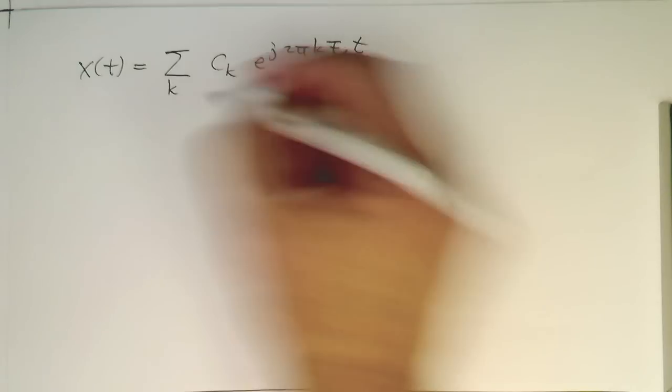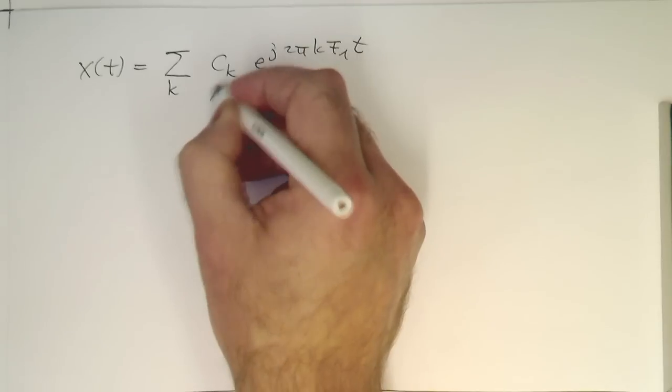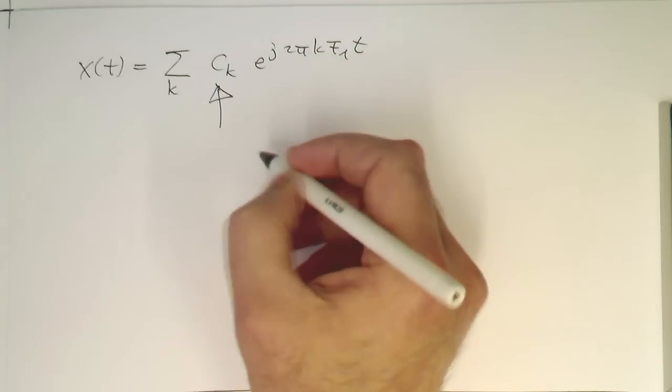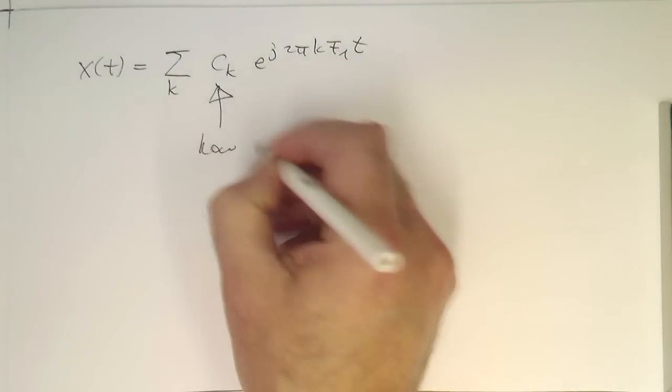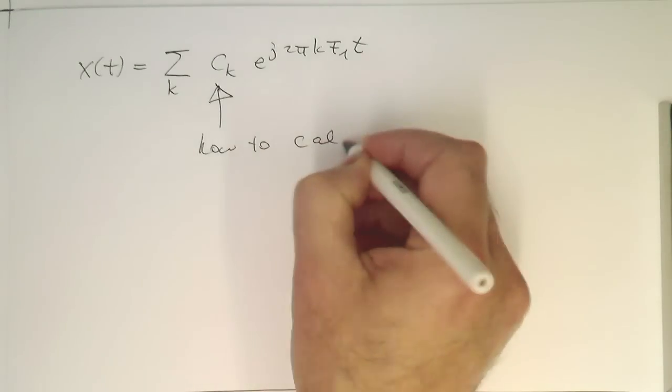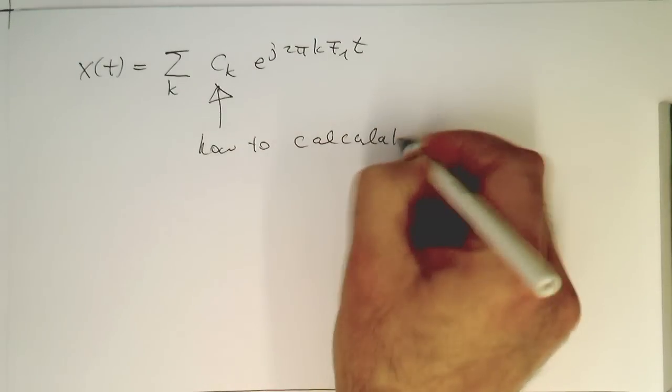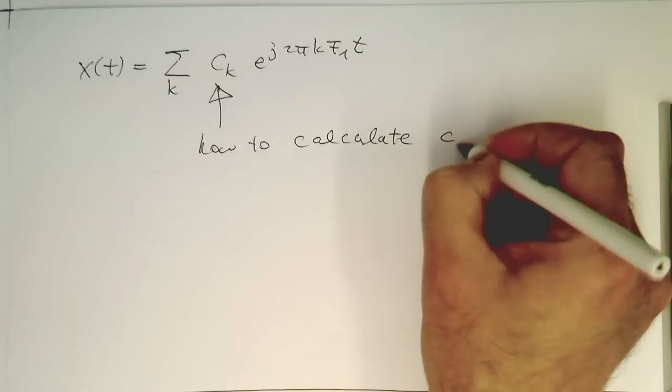So now the question is, how can we calculate these ck's here?